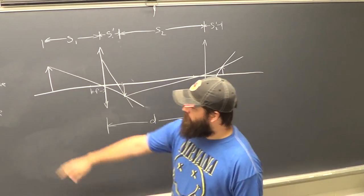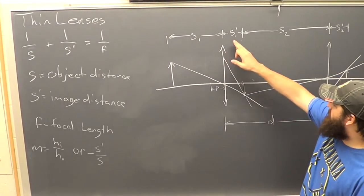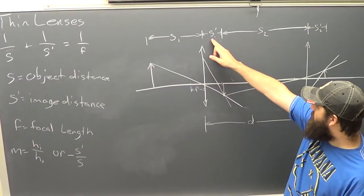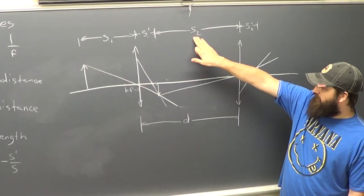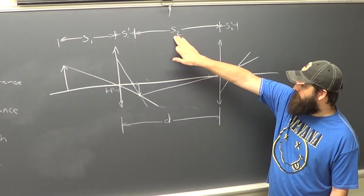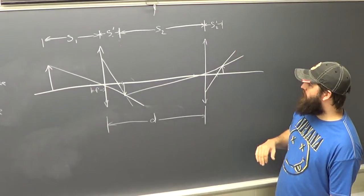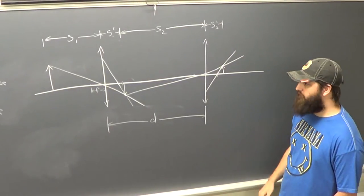And then you will use the distance between the two lenses, and then you will use S1 to calculate S1 prime. Once you have S1 prime, you use it and D to calculate S2. Then use the thin lens equation again with S2 to calculate S2 prime. After that, you can compare your calculated S2 prime to your measured S2 prime.